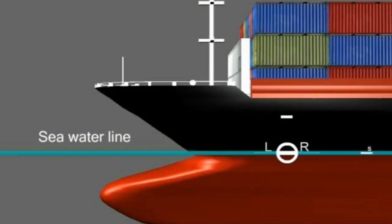The summer load line is the primary mark. It is from this line that all other lines or marks derive.